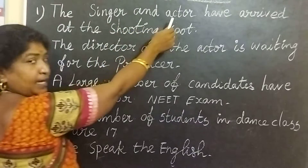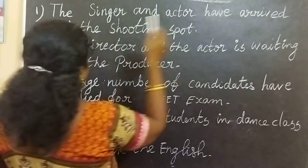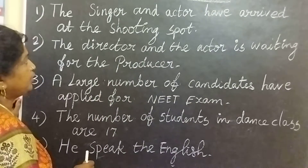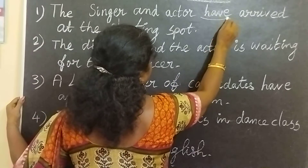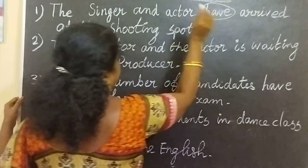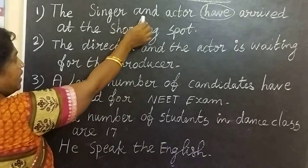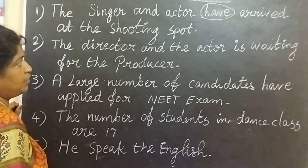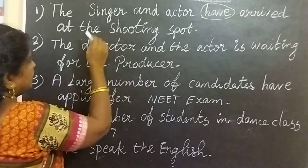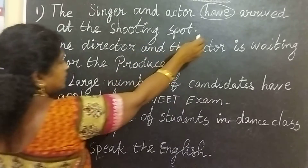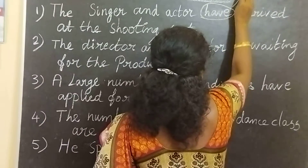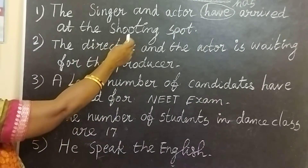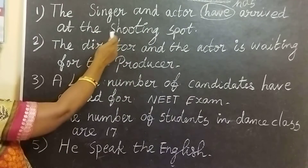First one: the singer and actor have arrived at the shooting spot. What is the error? So, the correct answer is: the singer and actor have arrived at the shooting spot.